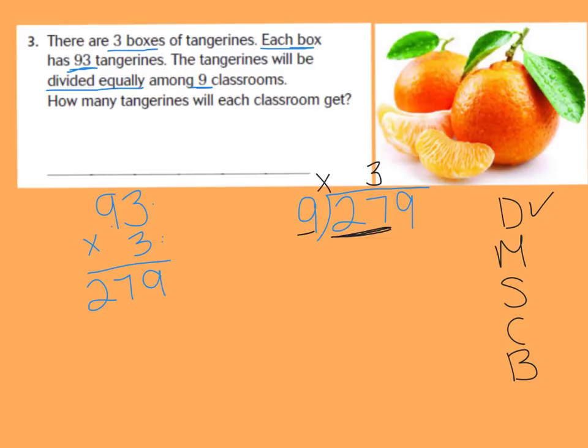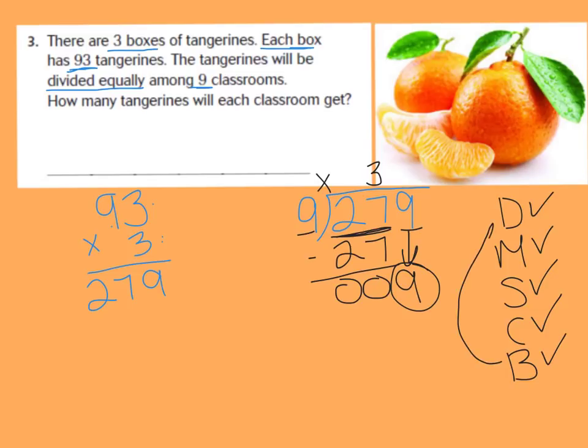Now I can multiply. 3 times 9 gives me 27. When I subtract, I get 0. 0 is less than 9, and I can bring down my next number in my dividend, which is 9. I'm going to circle that 9 because I'm going to need it again. And once you bring down, you come back around, and we do our steps again. Again, I'm going to divide 9 into my 9. 9 goes into 9 one time. 1 times 9 gives me 9. 9 minus 9 is 0. 0 is less than 9, and I don't have any more numbers on my dividend to bring down, so that means that my division problem is finished. My quotient is 31.